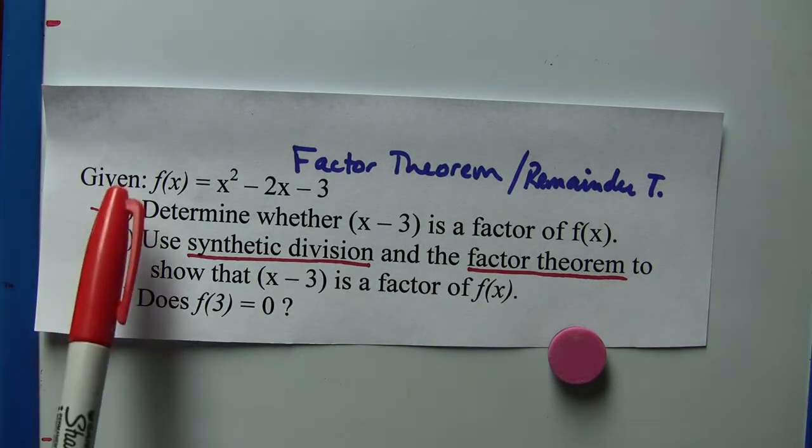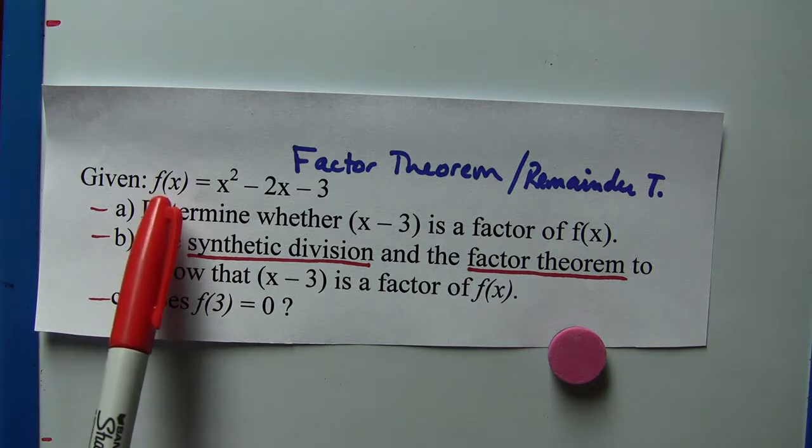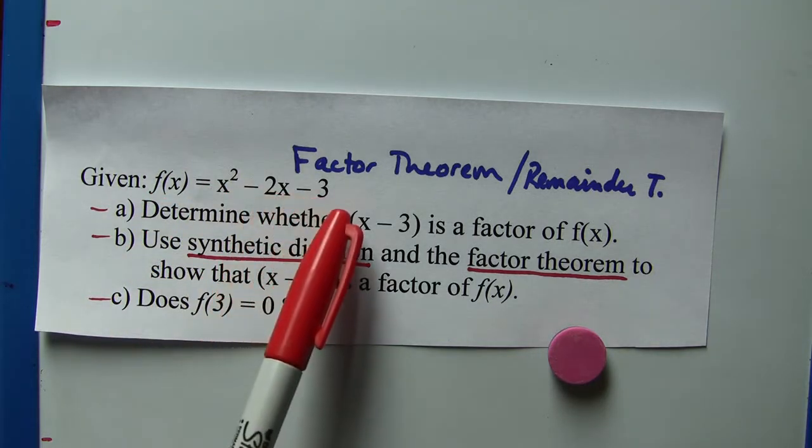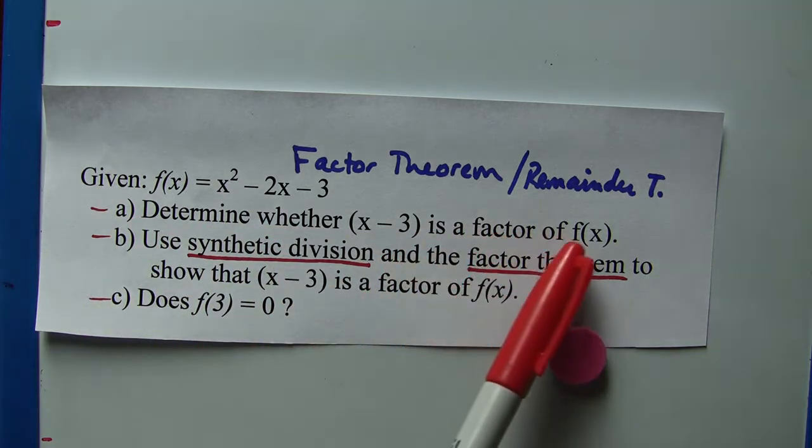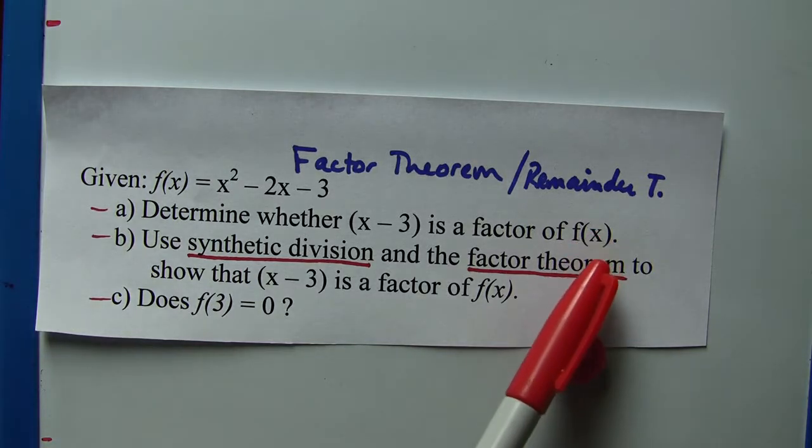Let's say we have a given function f(x) = x² - 2x - 3. There are three things we're going to do here. Part a: we're going to determine whether (x - 3) is a factor of f(x), and we're going to do this by factoring.